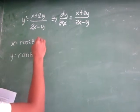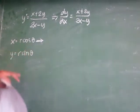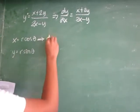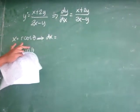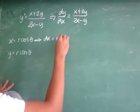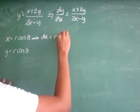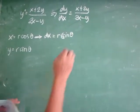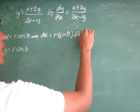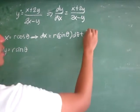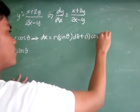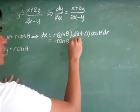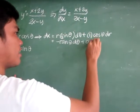To solve for dx, we have x equal to r cosine theta, so we need to find the derivative of this equation. By the product rule of differentiation, we get dx equal to negative r sine theta d theta plus cosine theta dr.